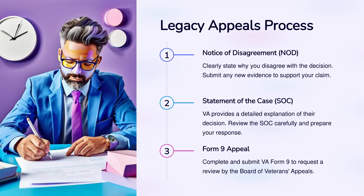Legacy Appeals Process. Notice of Disagreement: clearly state why you disagree with the decision and submit any new evidence to support your claim. Statement of the Case: the VA provides a detailed explanation of their decision — review the SOC carefully and prepare your response. Form 9 Appeal: complete and submit VA Form 9 to request a review by the Board of Veterans' Appeals.